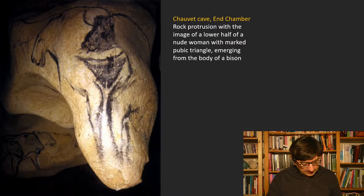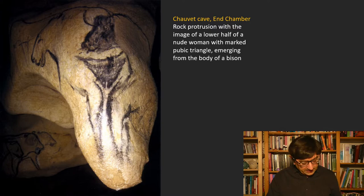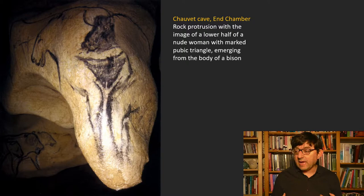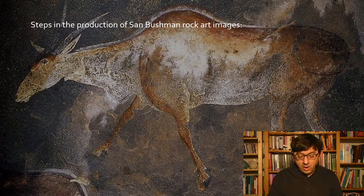The images of humans are much less common on the cave walls, and when they do appear, they merge and hybridize with animals. This rock protrusion in the Chauvet caves depicts the lower half of a nude woman with a marked pubic triangle, emerging from the body of a bison. What does this marked sexuality and animal-human hybridity signify?